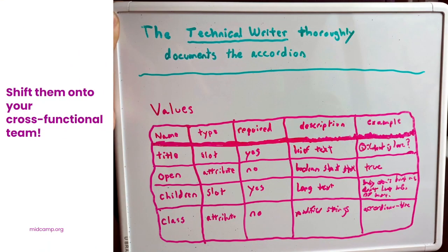We have to train people and memorialize the work, so there's a lot to say about even one accordion component within a whole design system. At this point in the sprint, we're also doing QA, checking accessibility, writing automated tests, and other good code hygiene — though the documentation angle is the most visible in the process.